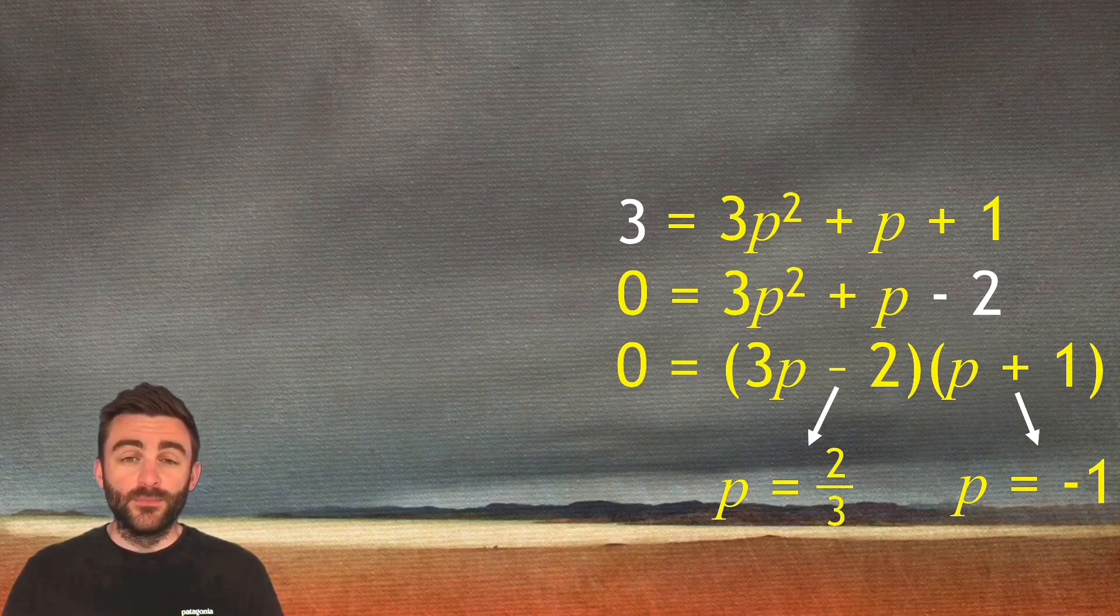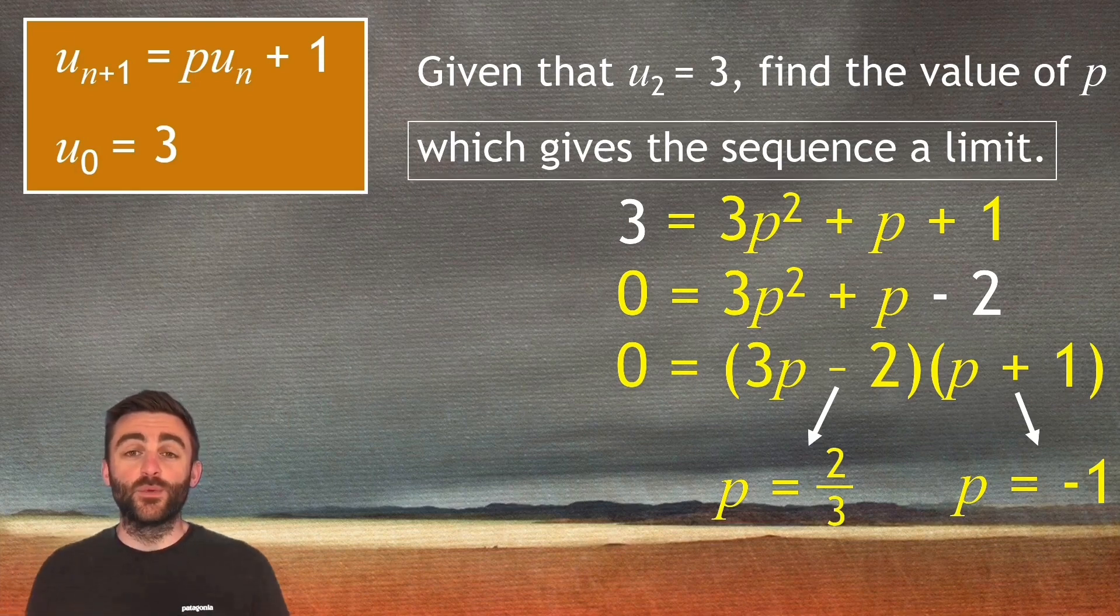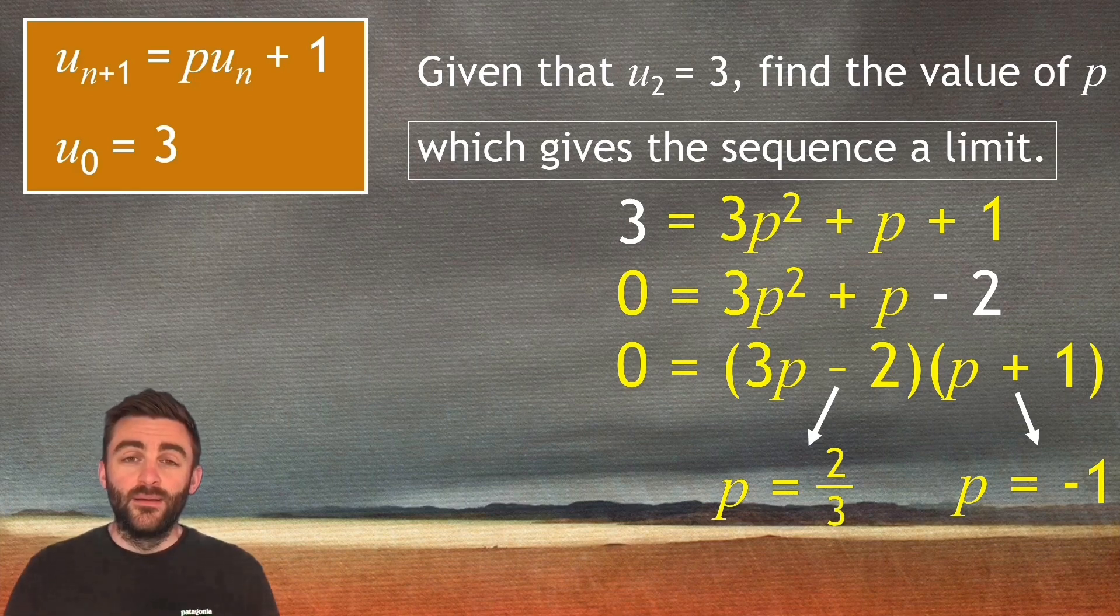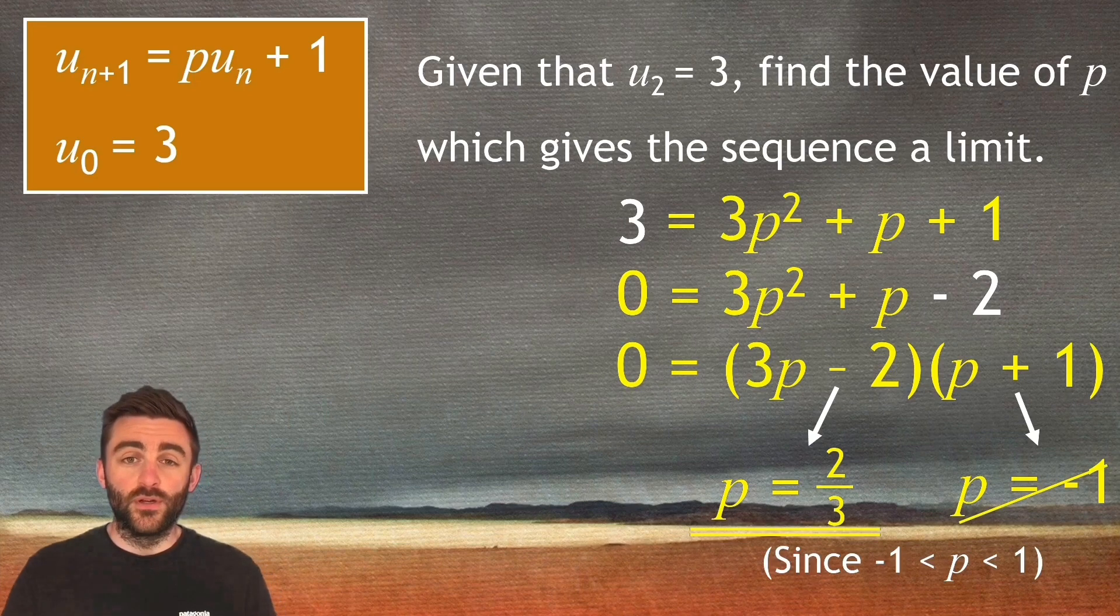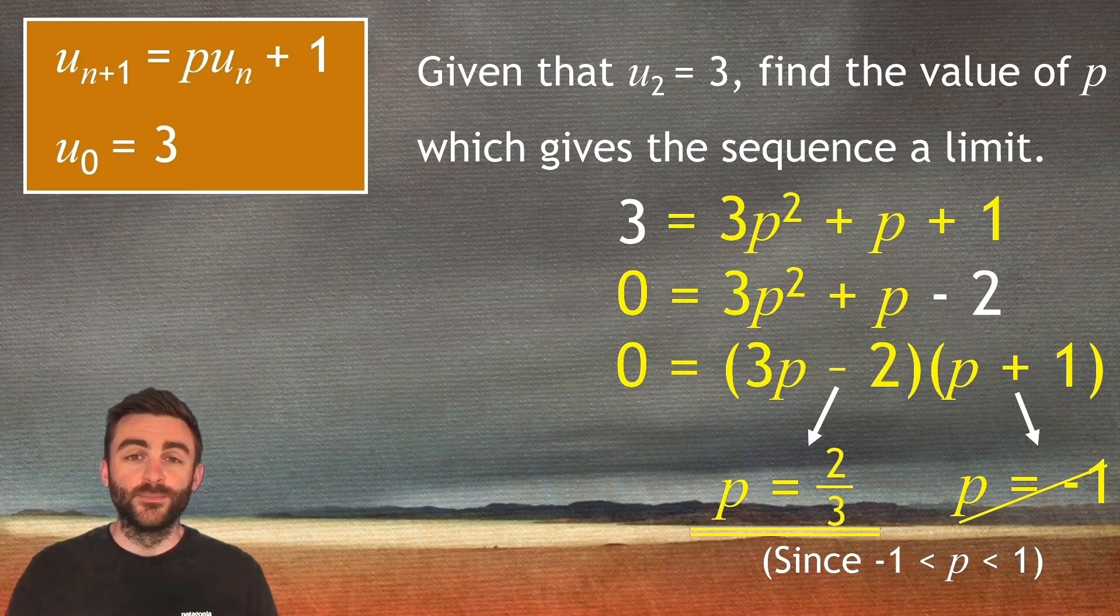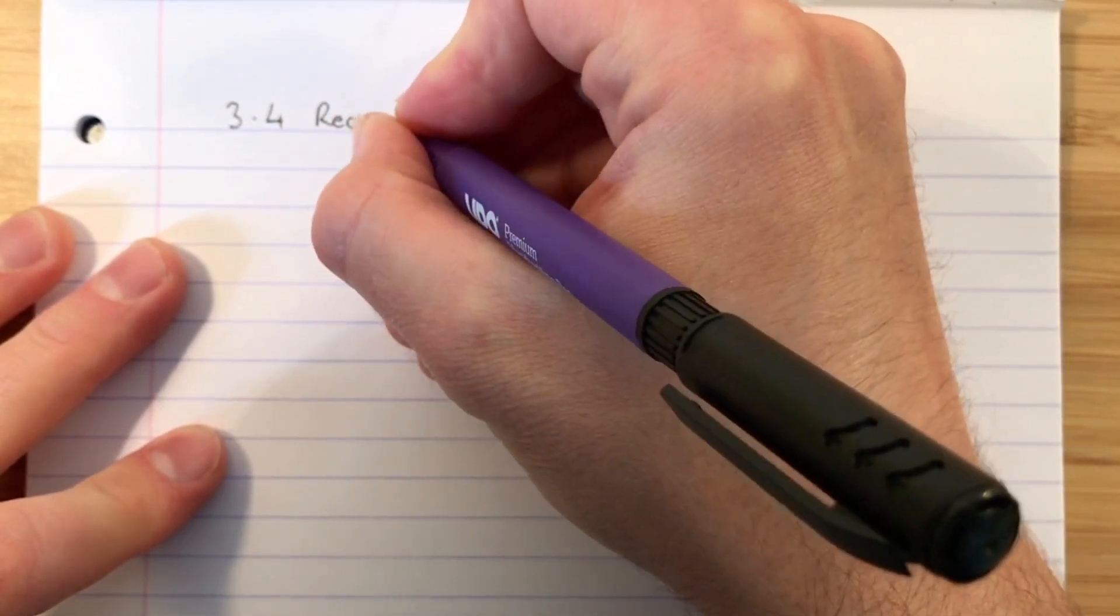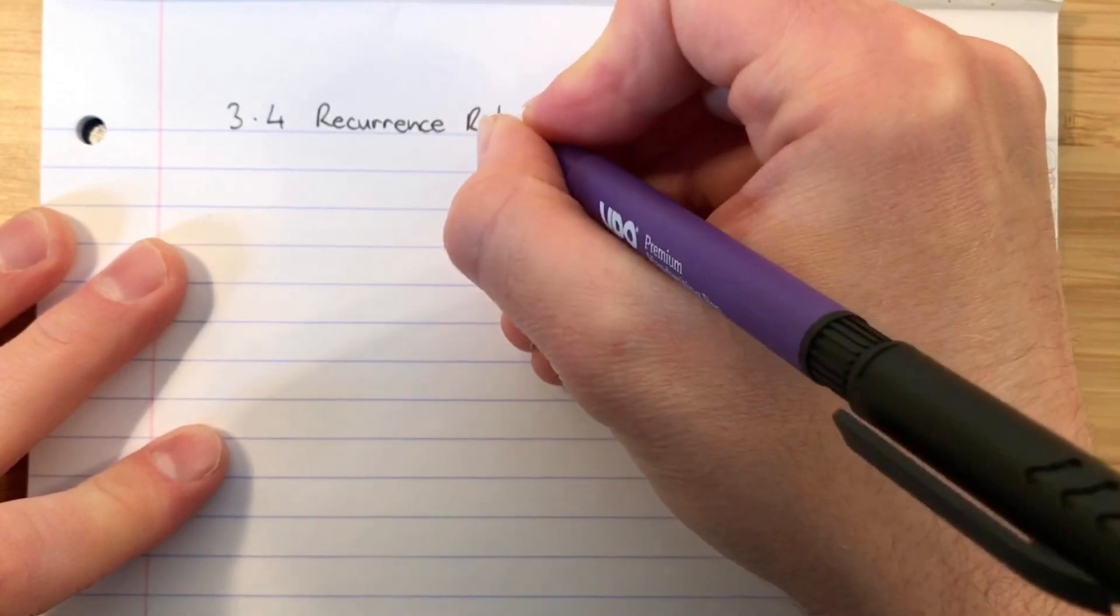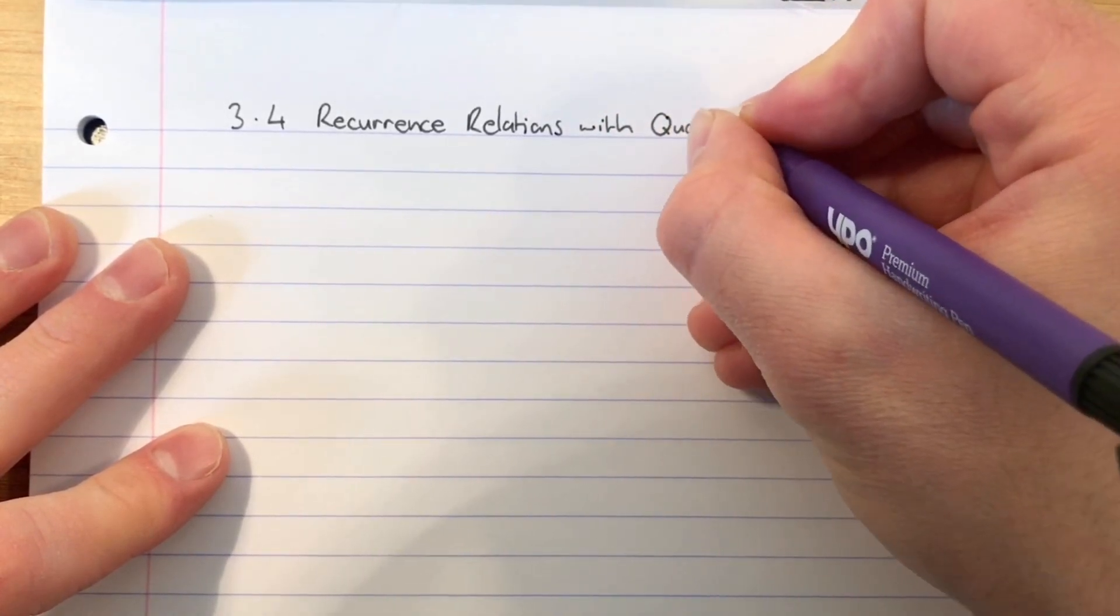In higher maths when you get two solutions to a problem you always have to be suspicious. In most cases we will be asked to discard one of those solutions. But if we look back up to the question you'll see it only wanted the value of p which gave us a sequence with a limit. So the condition for a sequence to have a limit is the value of p in this case must be between negative one and one. So that value on the right hand side p equals negative one is too small. It can be discarded. p equals two thirds is the only solution because p must be between negative one and one.